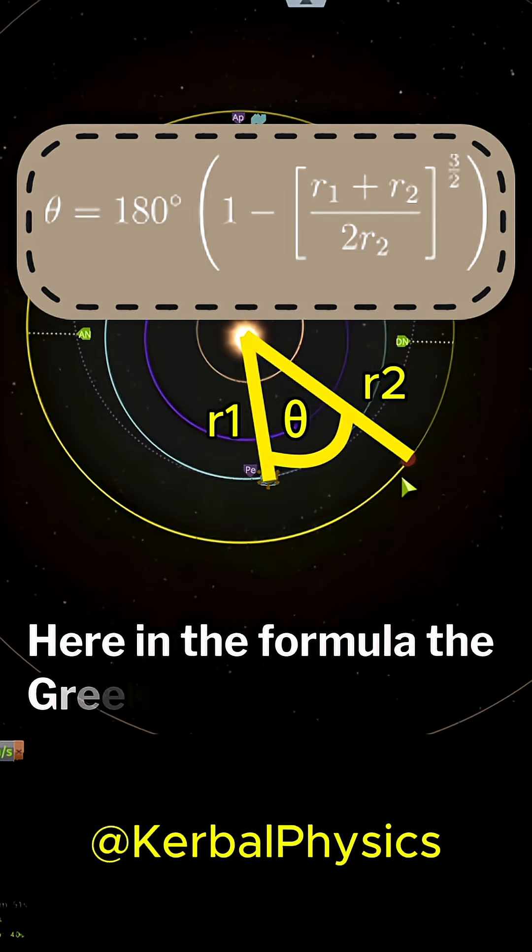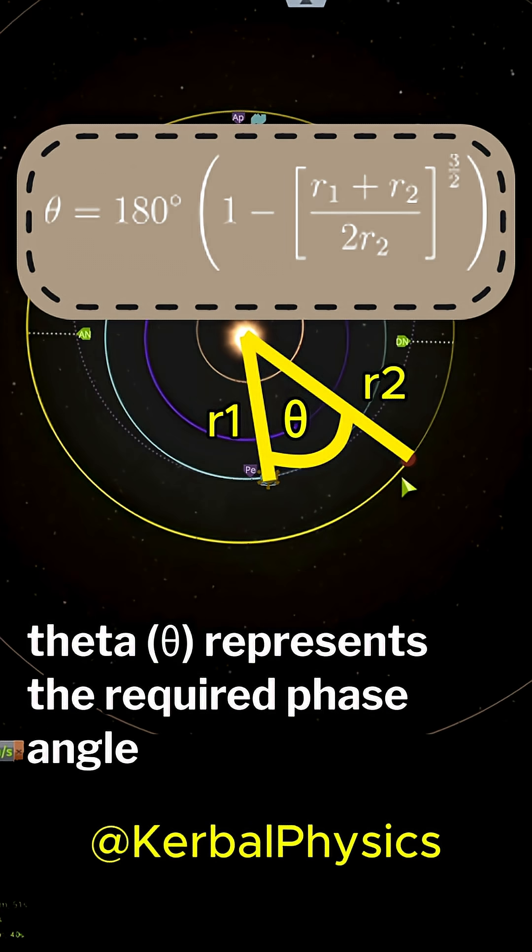Here in the formula, the Greek letter theta represents the required phase angle, in degrees.